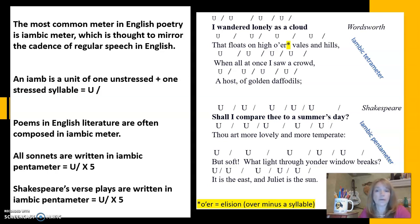All sonnets, whether they're English Shakespearean or Petrarchan or Spenserian, all sonnets are written in iambic pentameter, that is five iambes per line. And Shakespeare's very famous verse plays are all written in blank verse, which is unrhymed iambic pentameter.